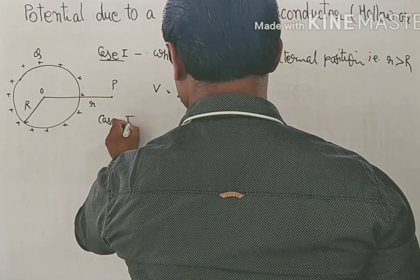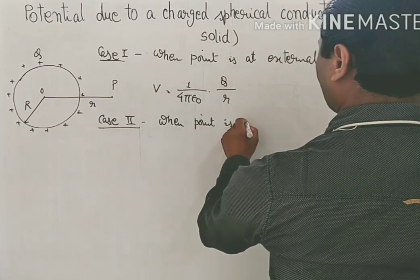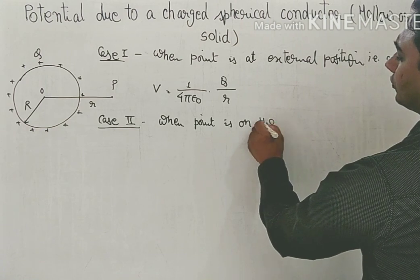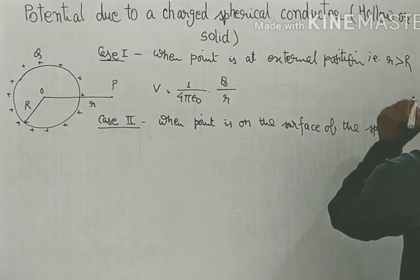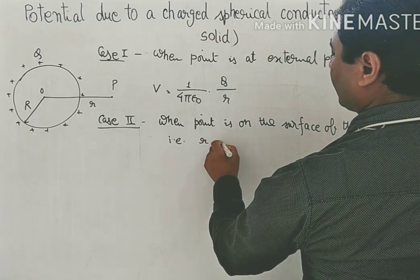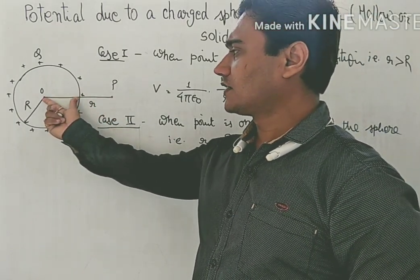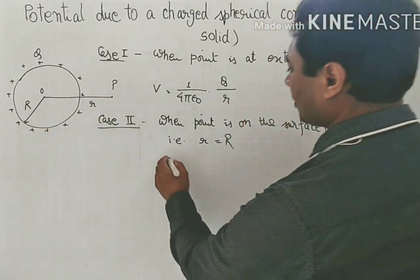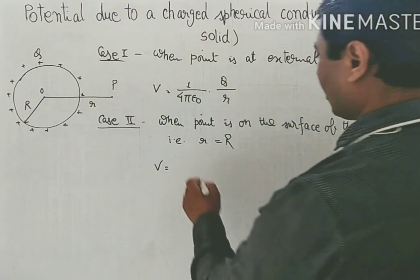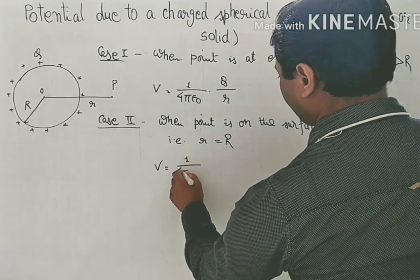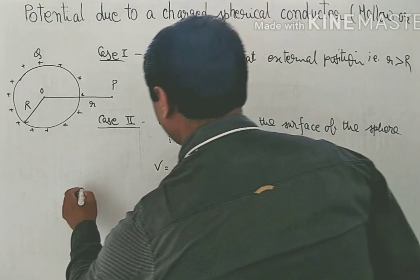Case 2: when the point is on the surface of the sphere — that is, capital R equals small r. We just replace small r with capital R in the expression, so we have V = (1/4πε₀) × Q/R. This is the value under this condition.